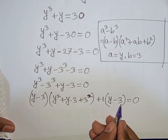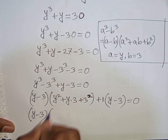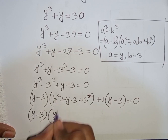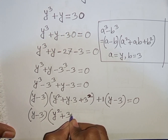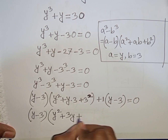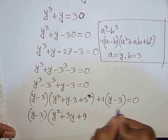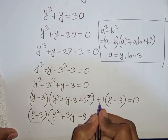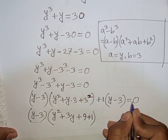We see (y minus 3) is common, so we factor it out. The (y minus 3) terms cancel, leaving us with: (y minus 3)(y² + 3y + 9 + 1) = 0.